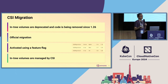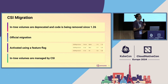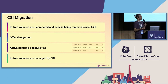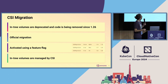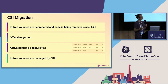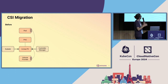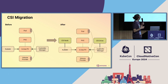With both in-tree and CSI volumes available, there was a need to get rid of the old in-tree volumes, so CSI migration was introduced. It's activated using a feature flag inside the API server and the kubelet, GA since Kubernetes 1.25. When you activate the migration, in-tree volumes are now managed by CSI the same way CSI volumes are. So you still have in-tree PVs, but they are now managed by the CSI node and CSI driver.